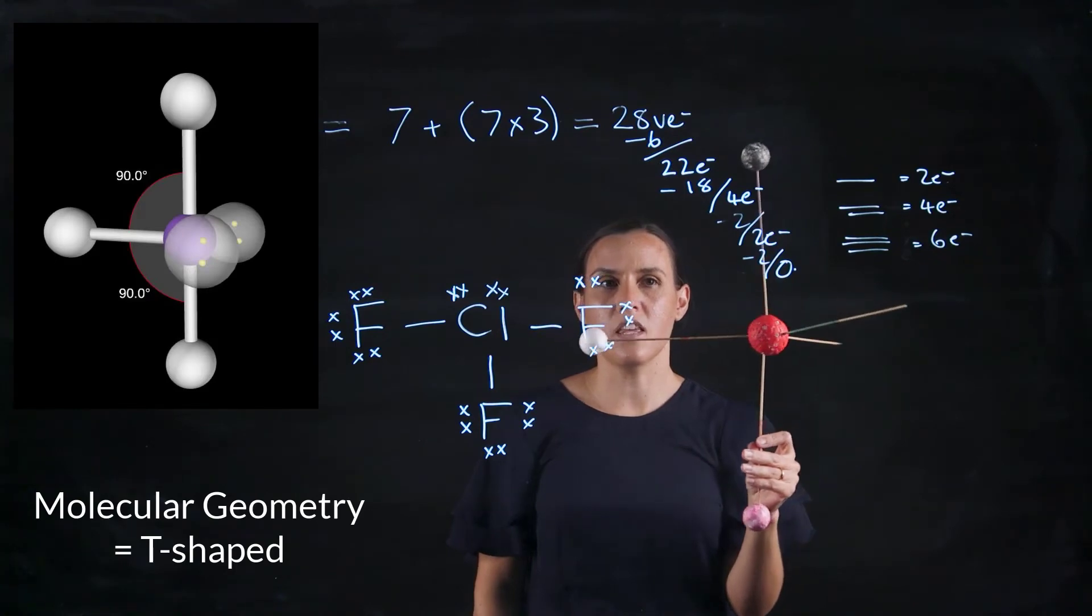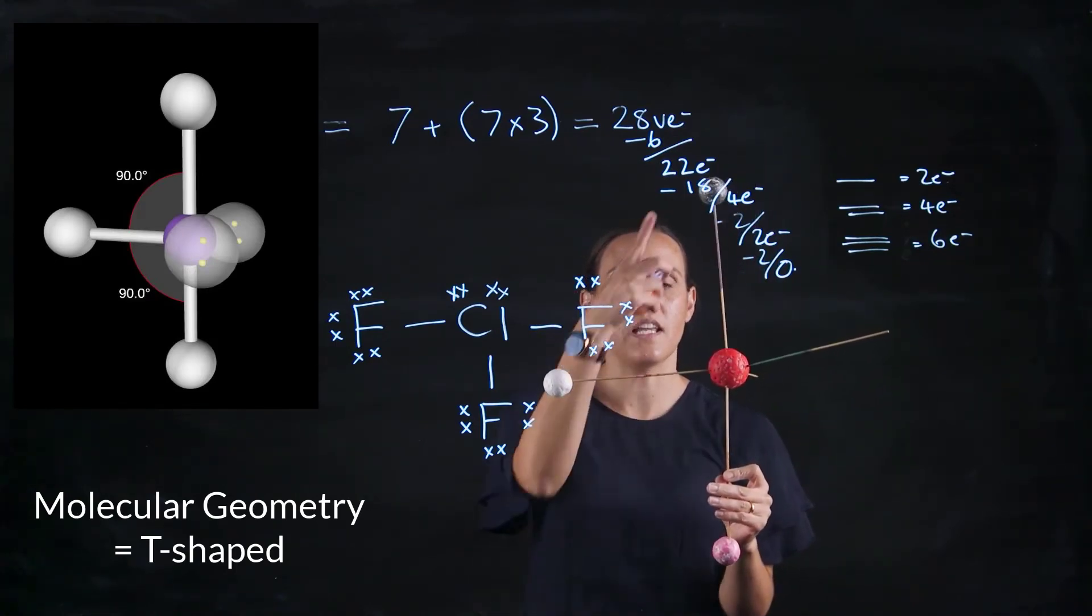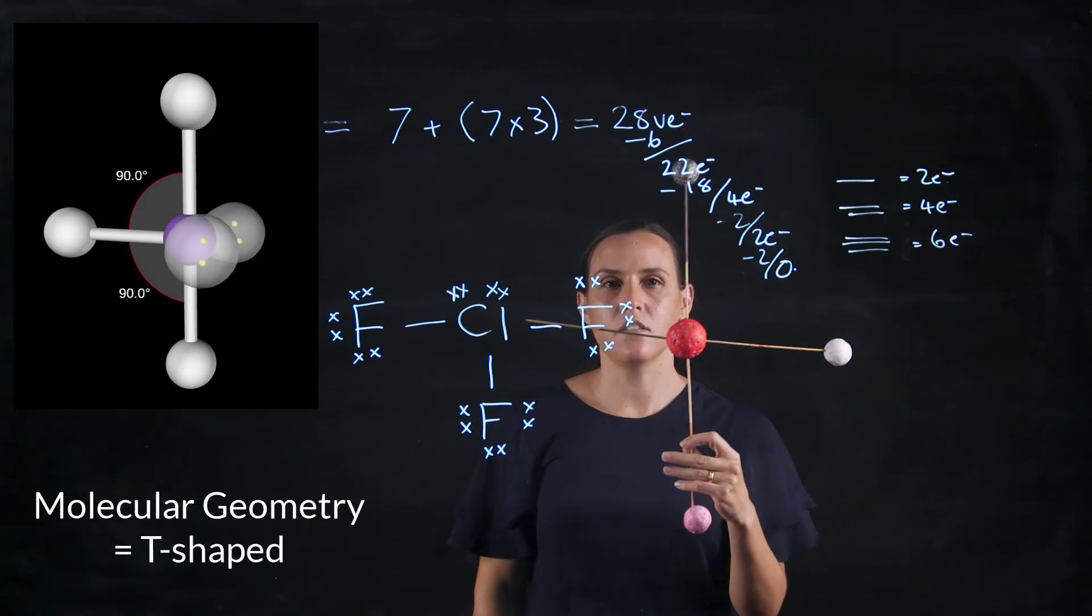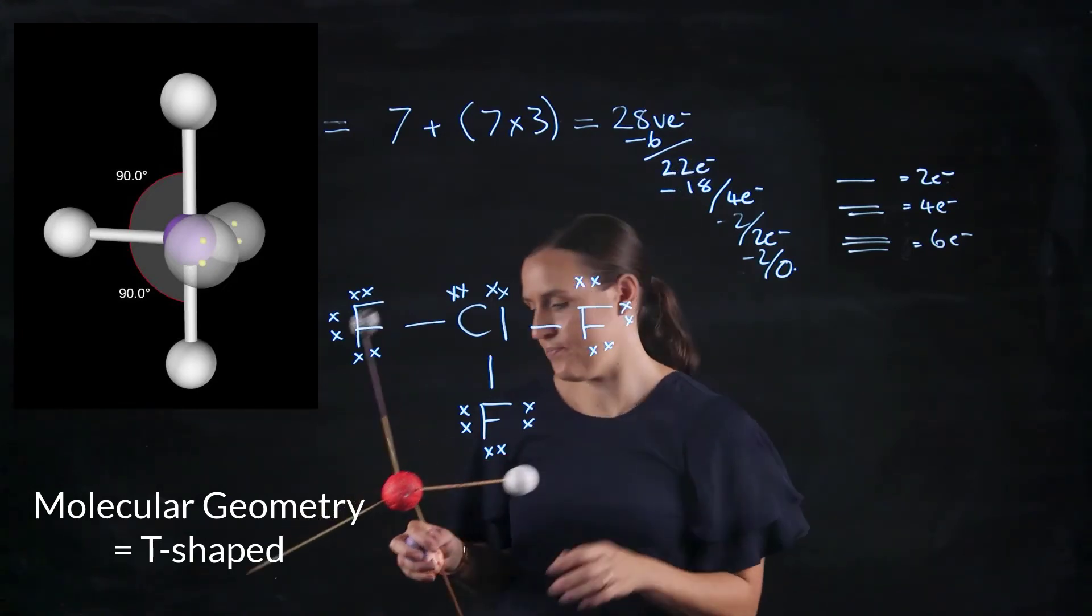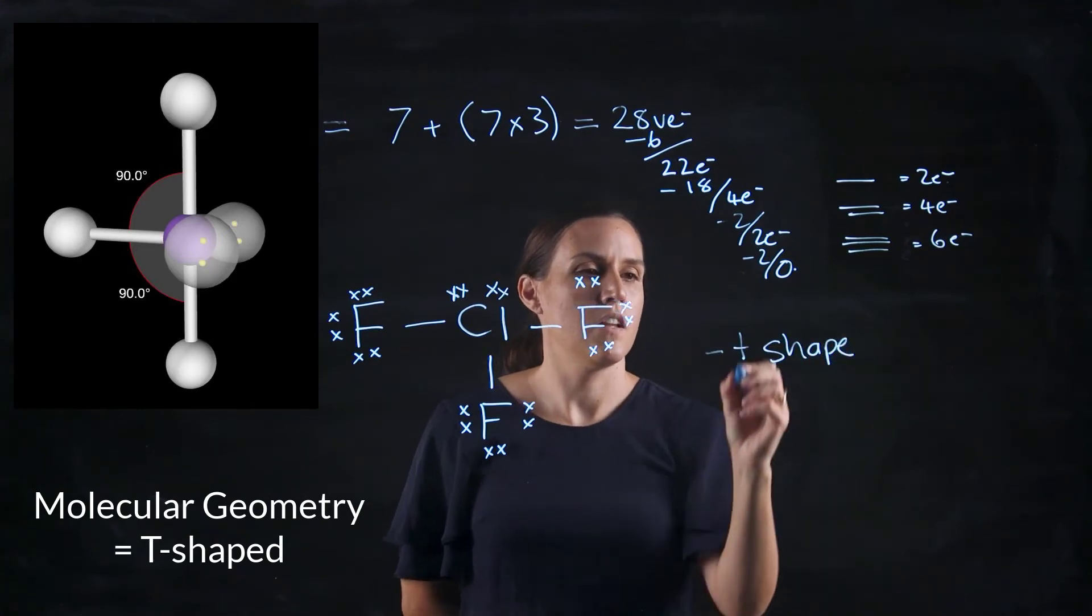So thinking about the name of that one, that one is our T shape. So our T shape there. So this would be a T-shaped structure.